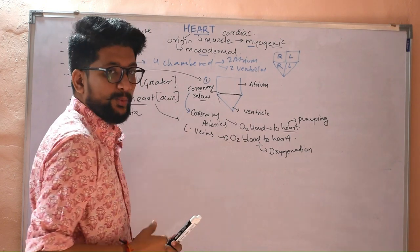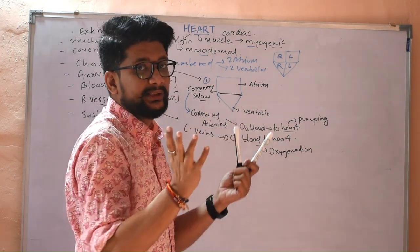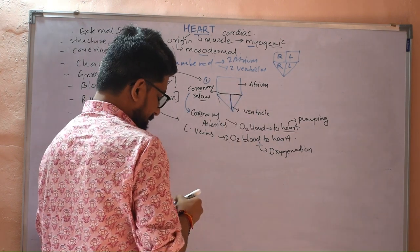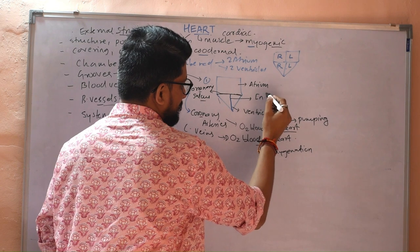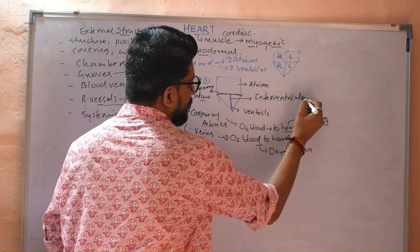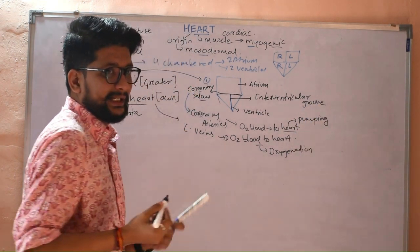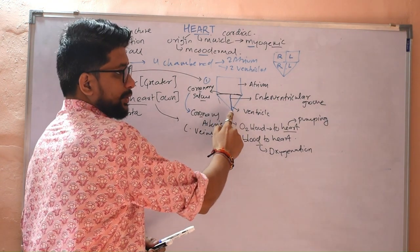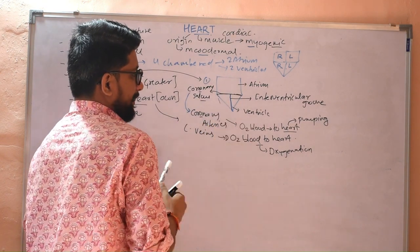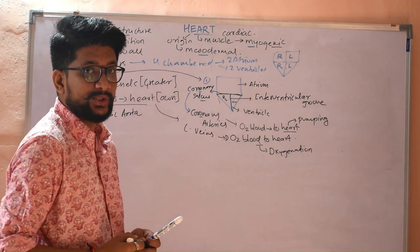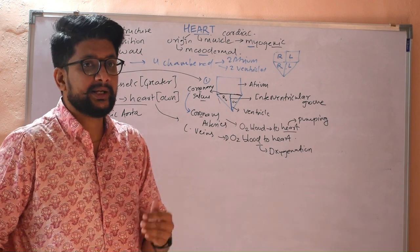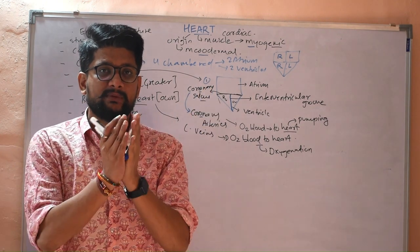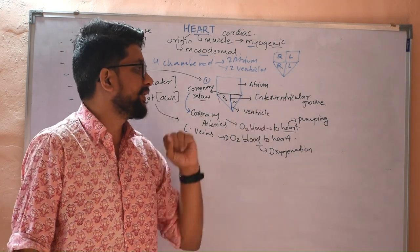The lower part of the heart is called the ventricles, but here the ventricle is still not differentiated into right and left parts. The groove which helps divide the ventricles into right and left ventricle is known as the interventricular groove. 'Inter' means inside, 'ventricular' represents ventricle, and 'groove' is a partition. So the interventricular groove divides the whole ventricle into right ventricle and left ventricle.